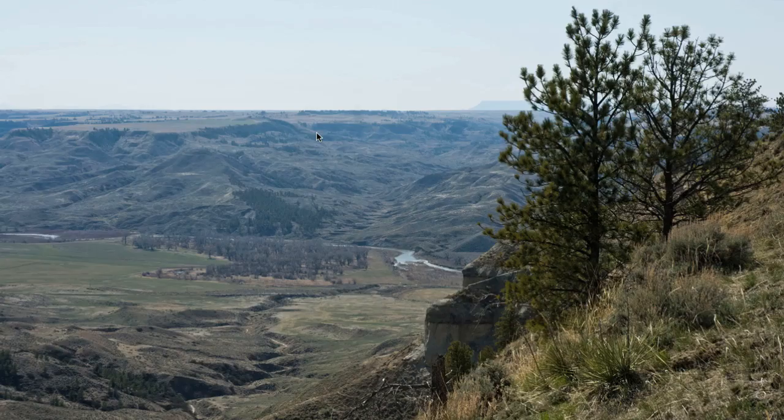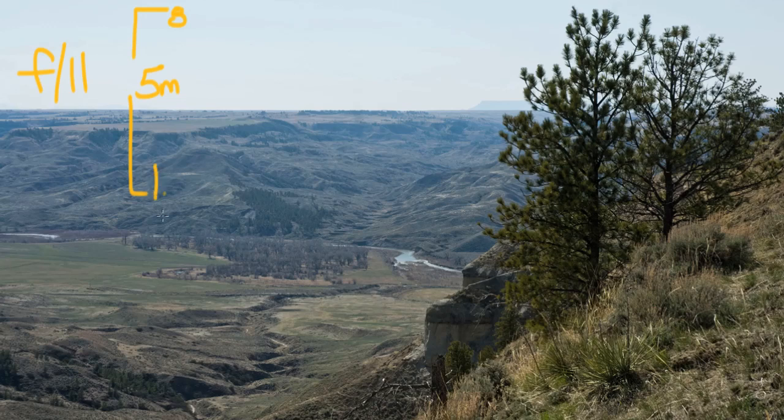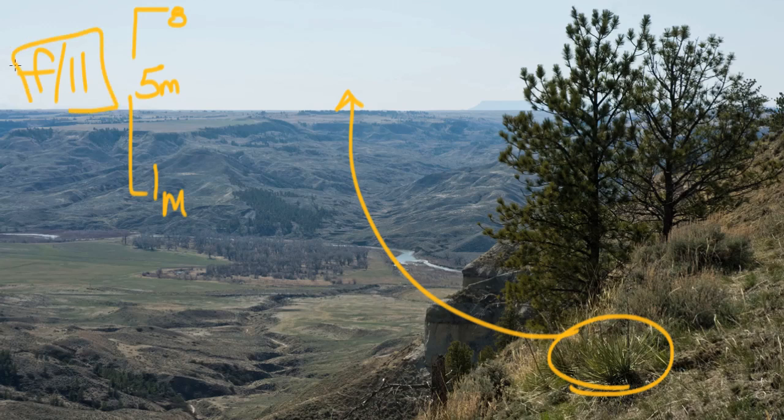Here's an example of depth of field being used in landscape. I've got f/11 turned on right now. Actually, I'm not focused at infinity - my focus point is probably around five meters, and at f/11 that gives me everything between infinity and probably about one meter or so. You can see everything from here all the way back to the edge of the earth is totally in focus. That's one great f-stop - f/11 is really great for shooting landscapes.